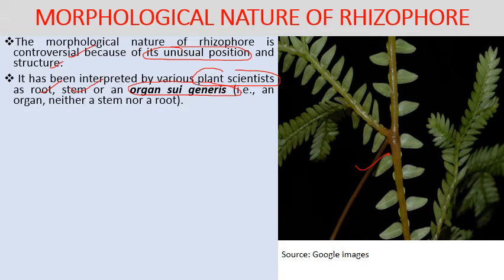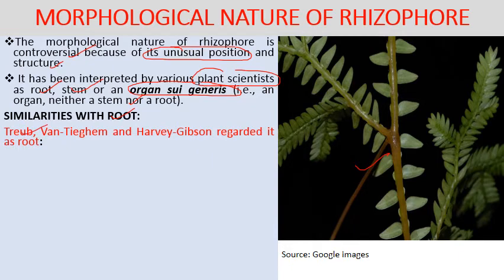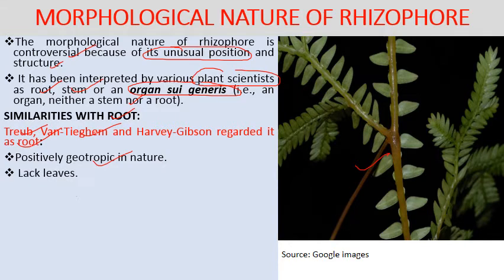Scientists like Tyghem and Harvey Gibson regarded the rhizophore as a root, citing: it is positively geotropic, it lacks leaves, it resembles true root in anatomy, the xylem is monarch like that of a root, and root cap is present in some species such as Selaginella tensa, Selaginella crociana, Selaginella martensii, and Selaginella wallacei, as reported by Webster and Steeves in 1967.